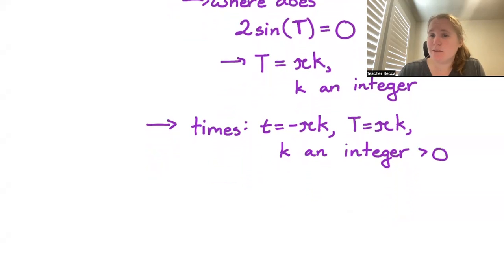So if k equals zero, the two times match, we want two different times. So we don't want to use k equals zero.